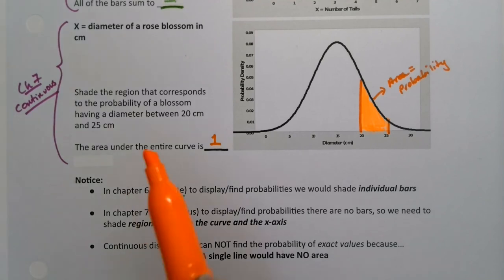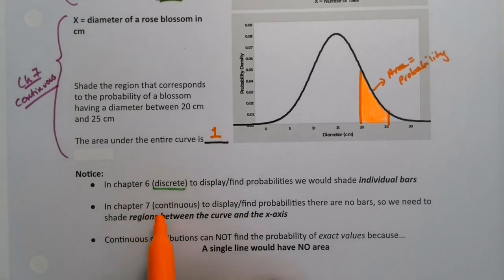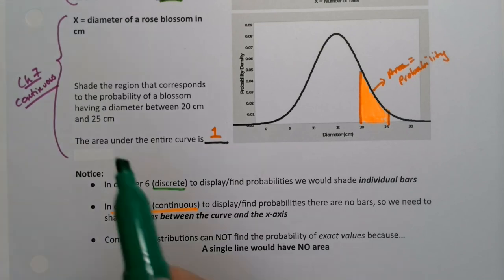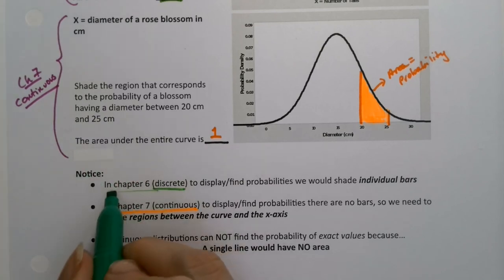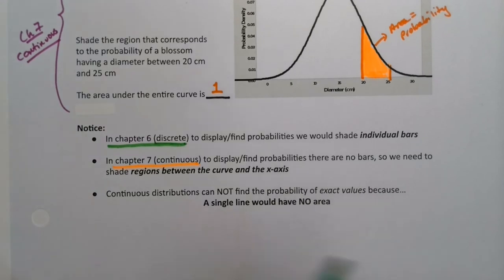With Chapter 7 and beyond, we'll be working with continuous distributions. With continuous distributions, there aren't particular bars, you're just shading regions under the curve, between the curve and the x-axis.